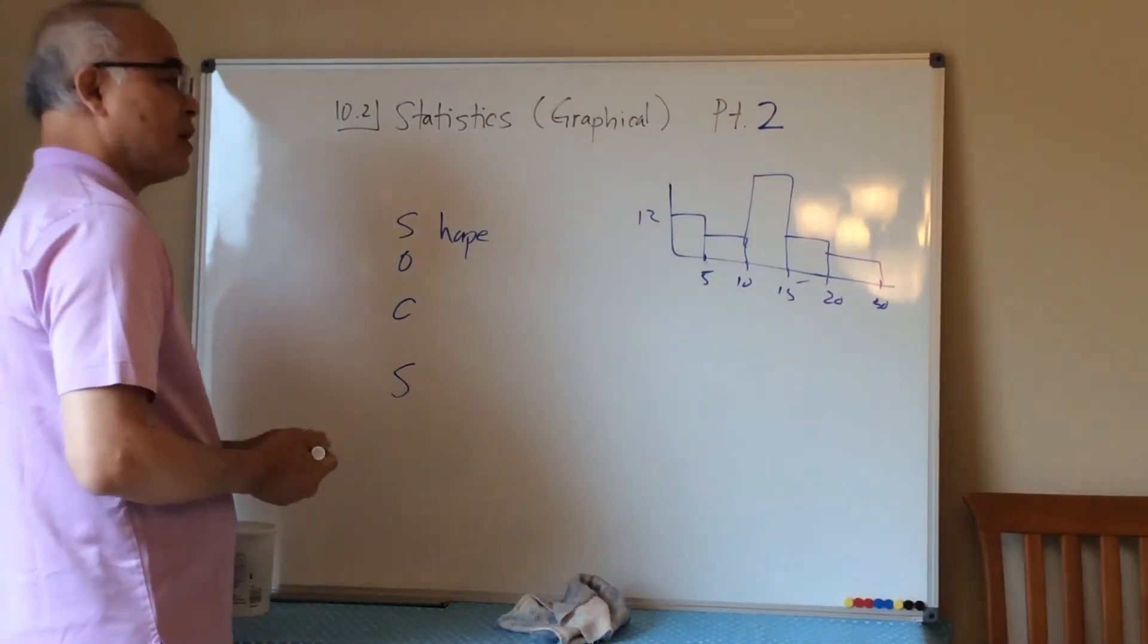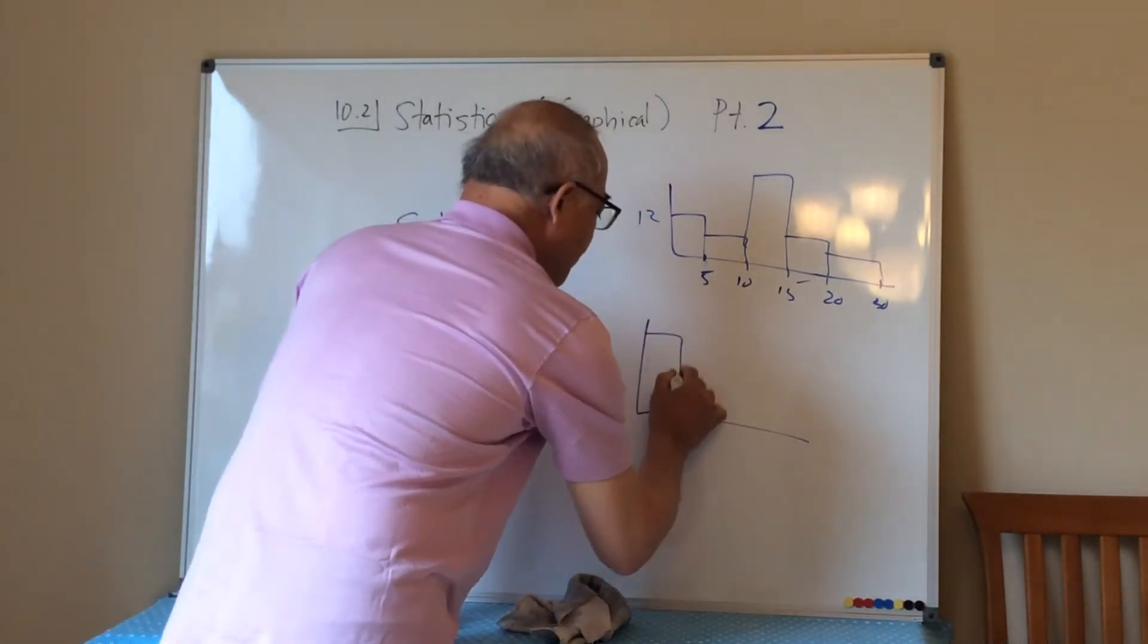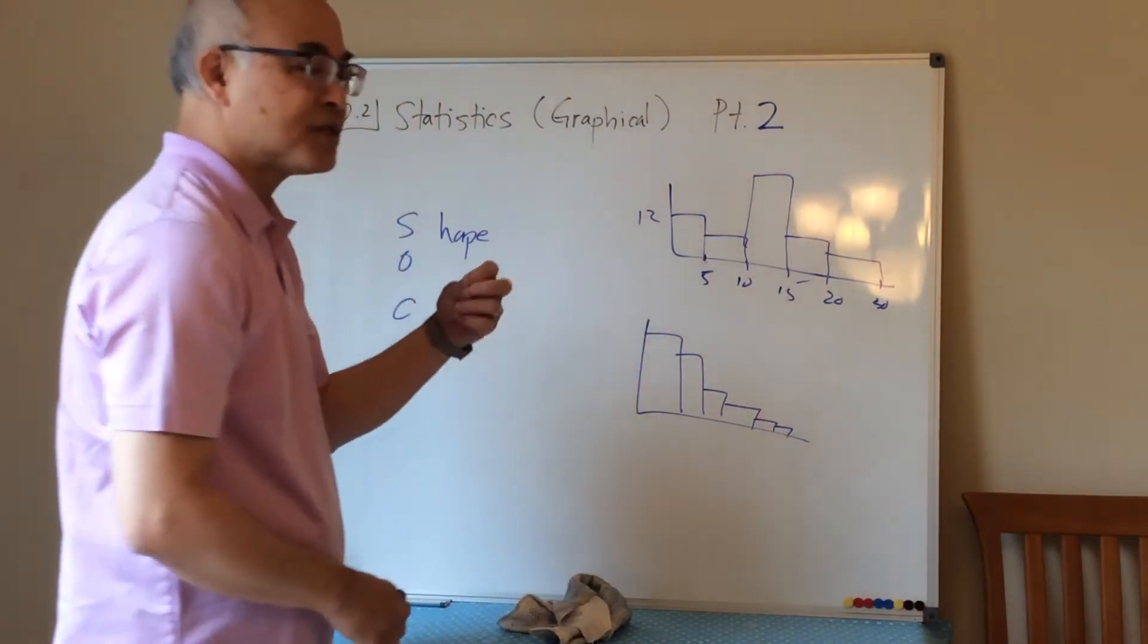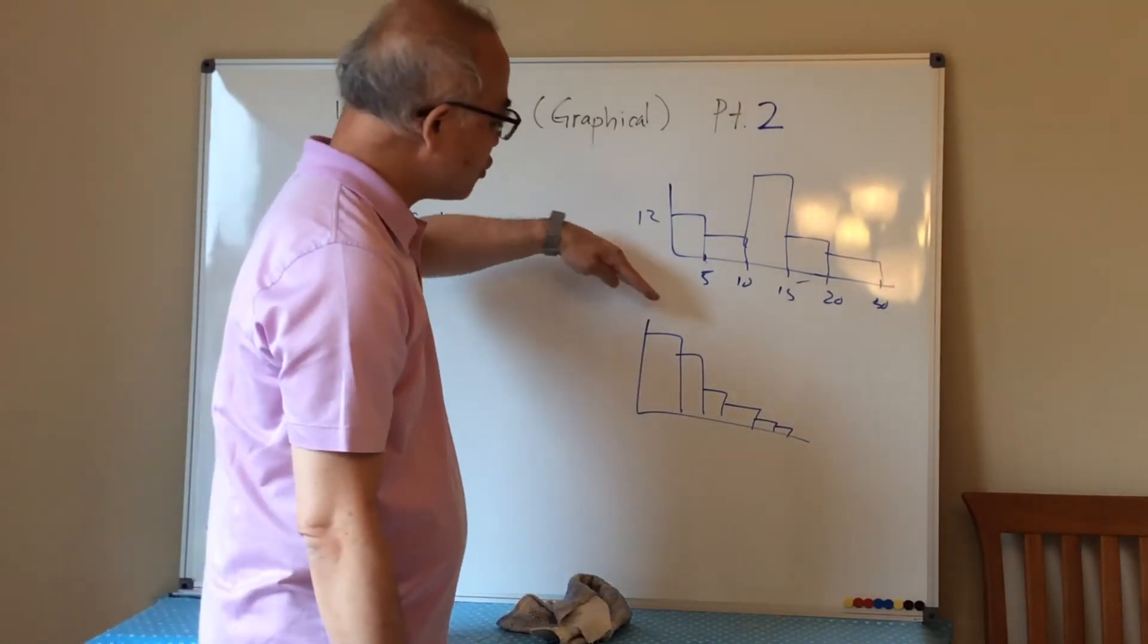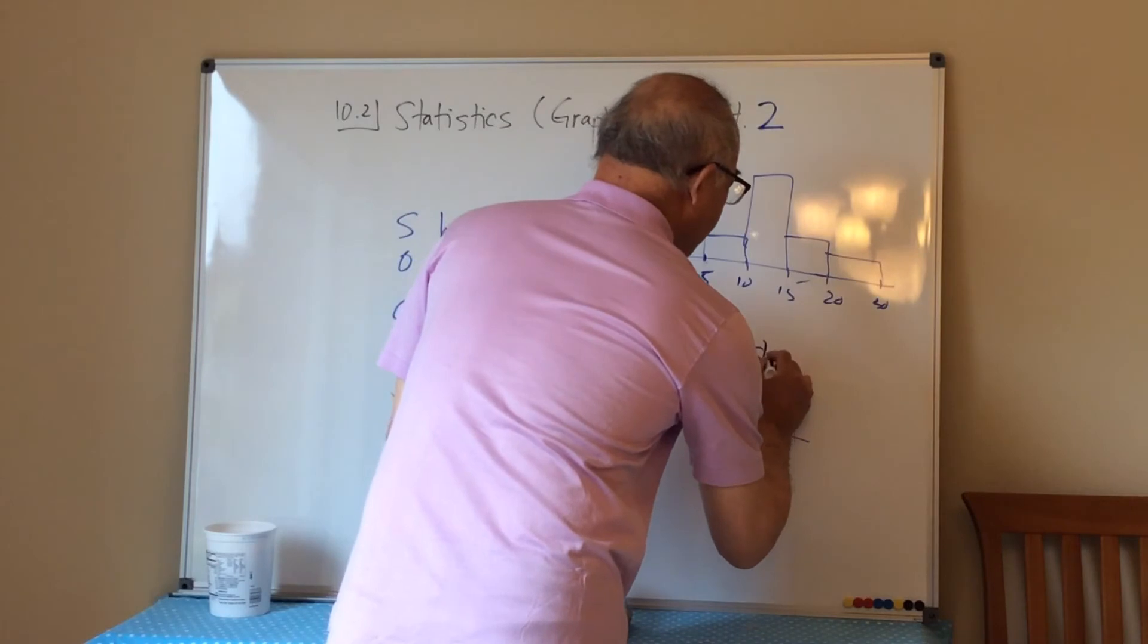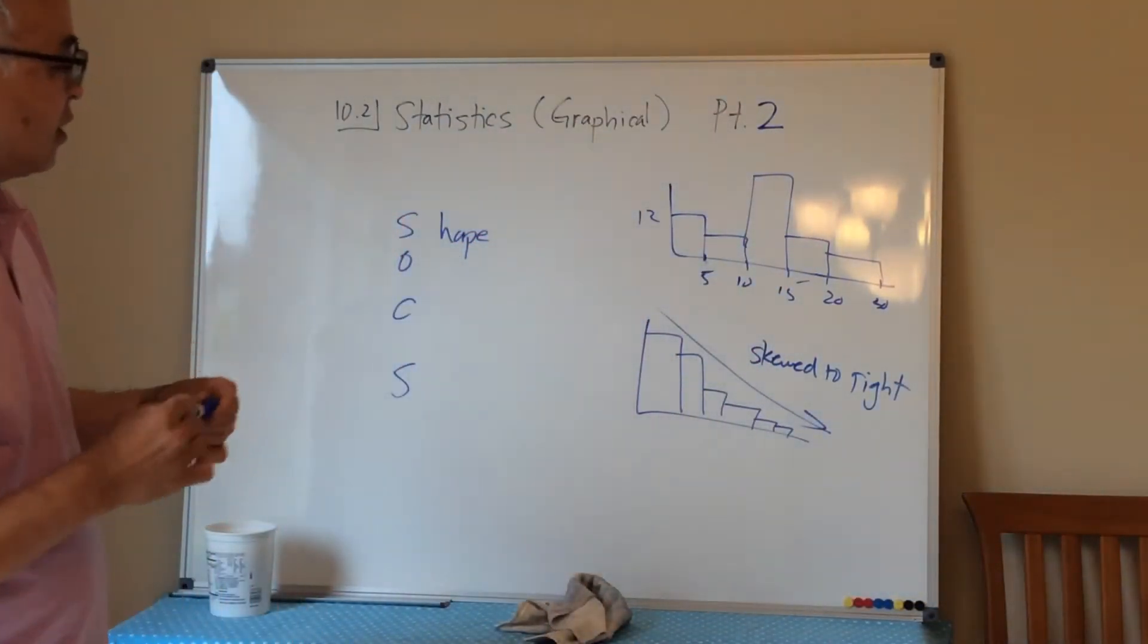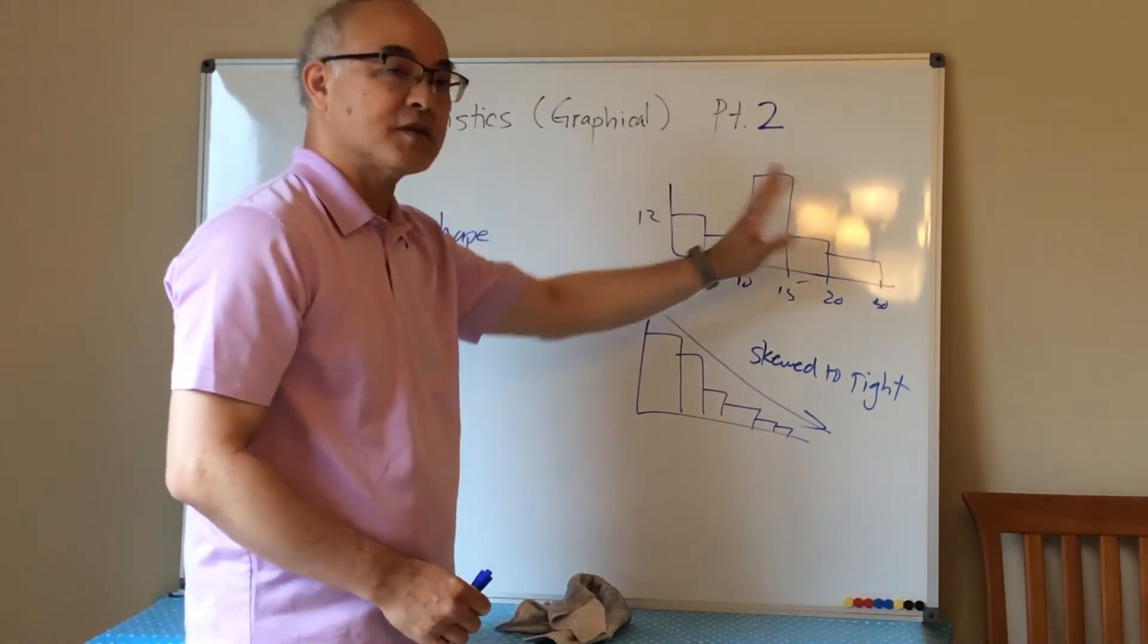The shape is going to be either roughly symmetric or be skewed to the right or skewed to the left. If I have a histogram that looks like this, this is what we call skewed. You would intuitively think this would be skewed to the left, but we call this skewed to the right. The data skews to the right because I'm skewing down to the right. So the shape is either going to be skewed to the right, skewed to the left, or it's going to be roughly symmetric.